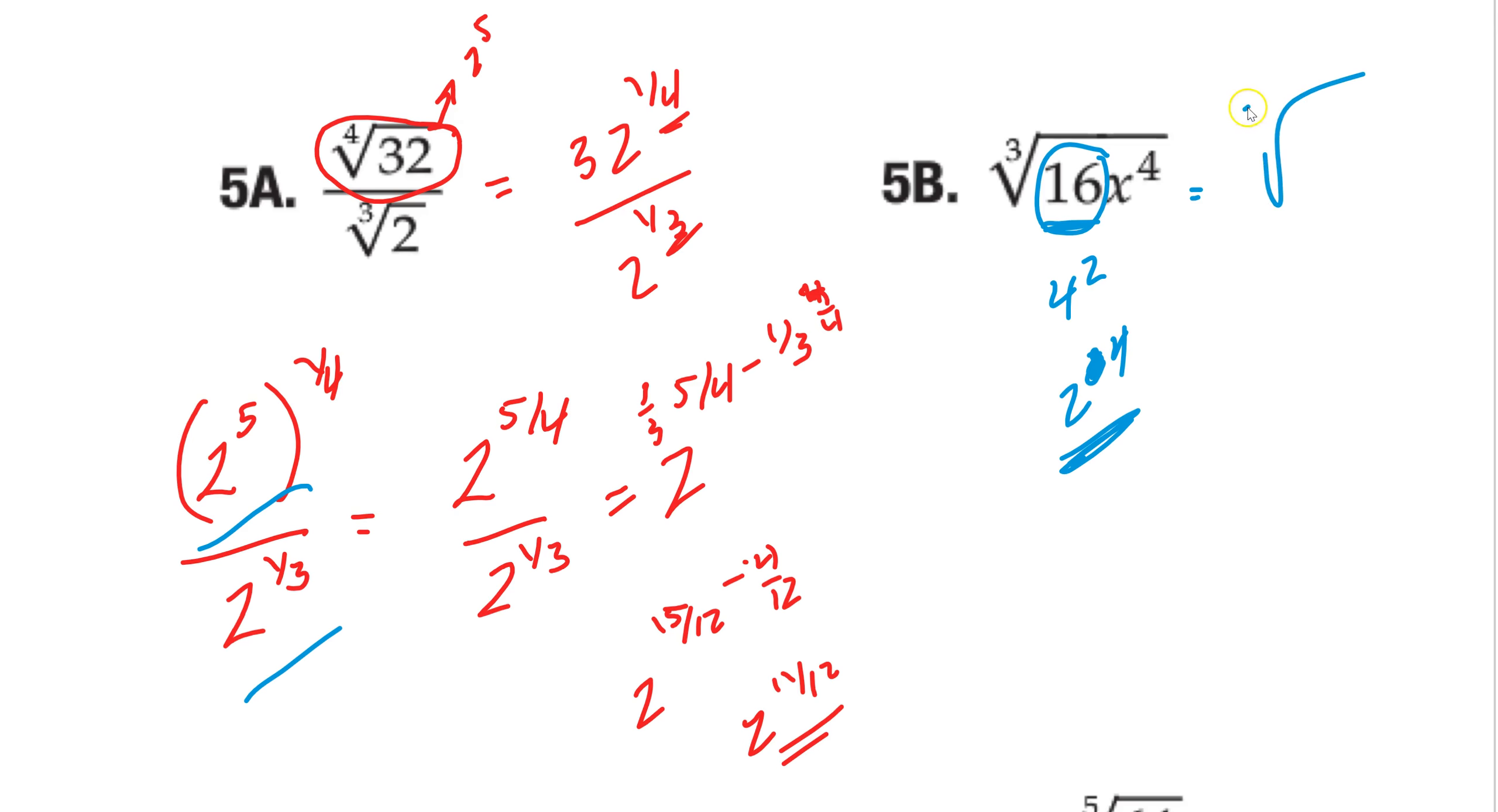So we're going to have the cube root of 2 to the 4th, x to the 4th. Now the way we do this, you divide the powers, right? So 4 divided by 2 is 2, wait, let's write it right here. 4 divided by 3, sorry. Is 1 remainder 1. So I have 1, 2 on the outside, 1, 2 on the inside. Same thing with x to the 4th. 4 divided by 3 is 1 remainder 1. So 1x on the outside, 1x on the inside. That's what they want for that one.